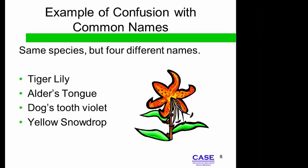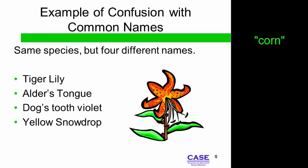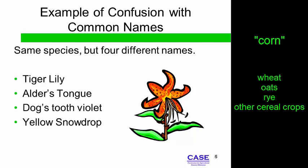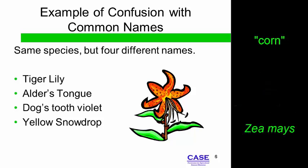Another example is the crop we refer to as corn here in the US. What we call corn is called maize in other countries. The term corn may refer to wheat, oats, rye, or other cereal crops in other countries. Using Zea mays, the scientific name, decreases the confusion when scientists communicate.